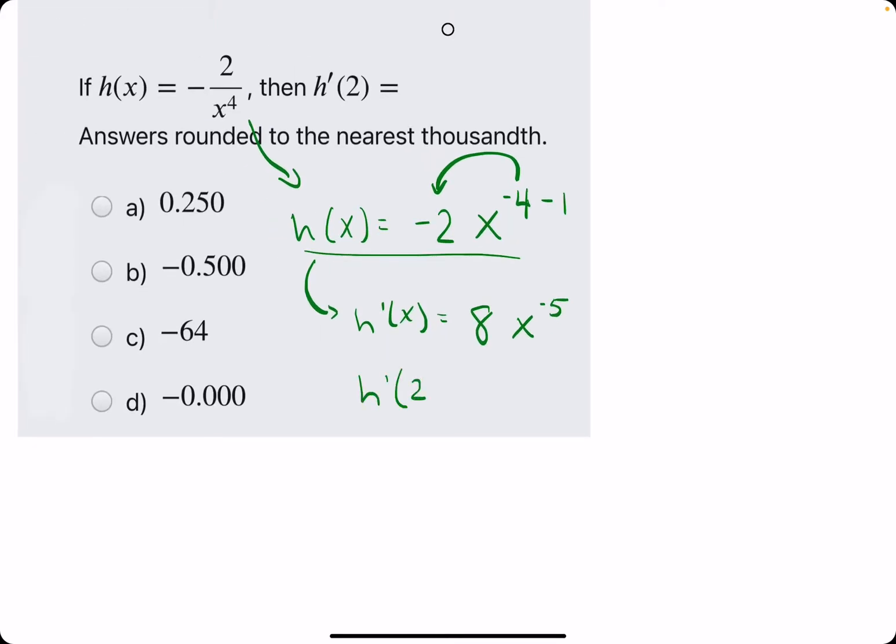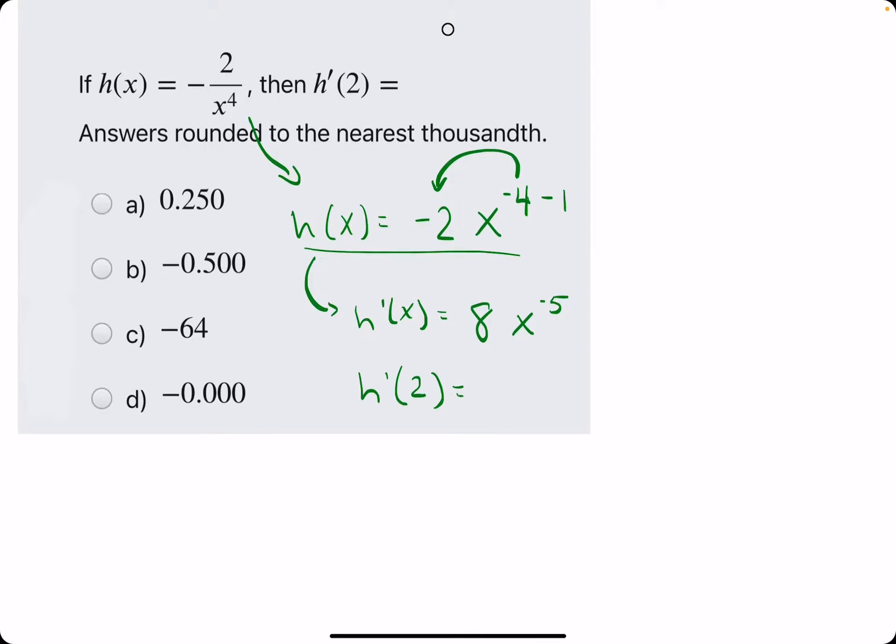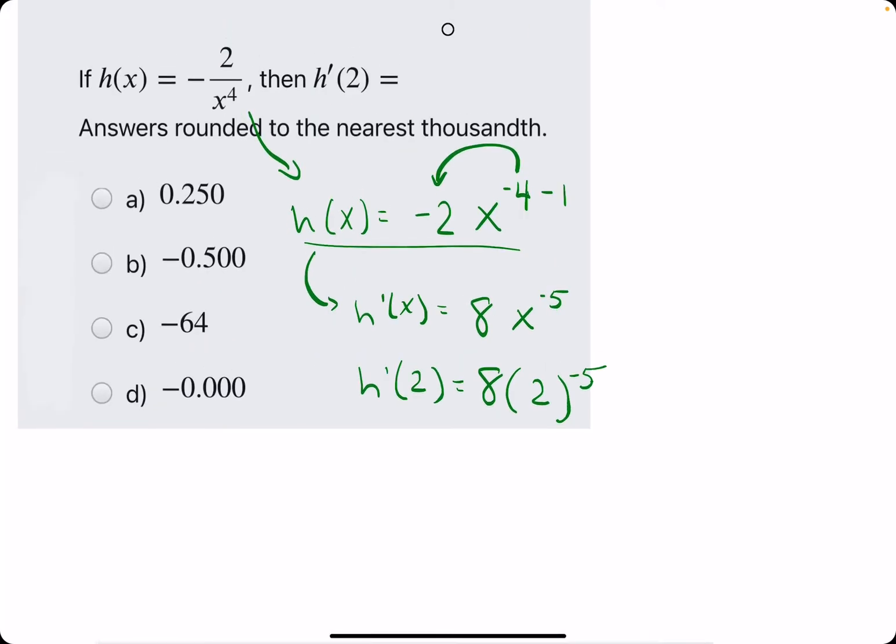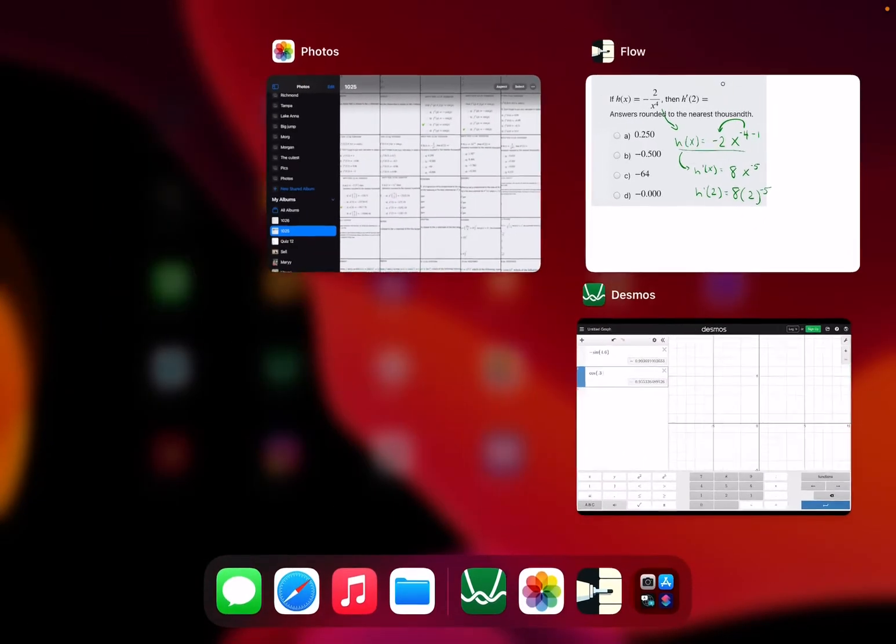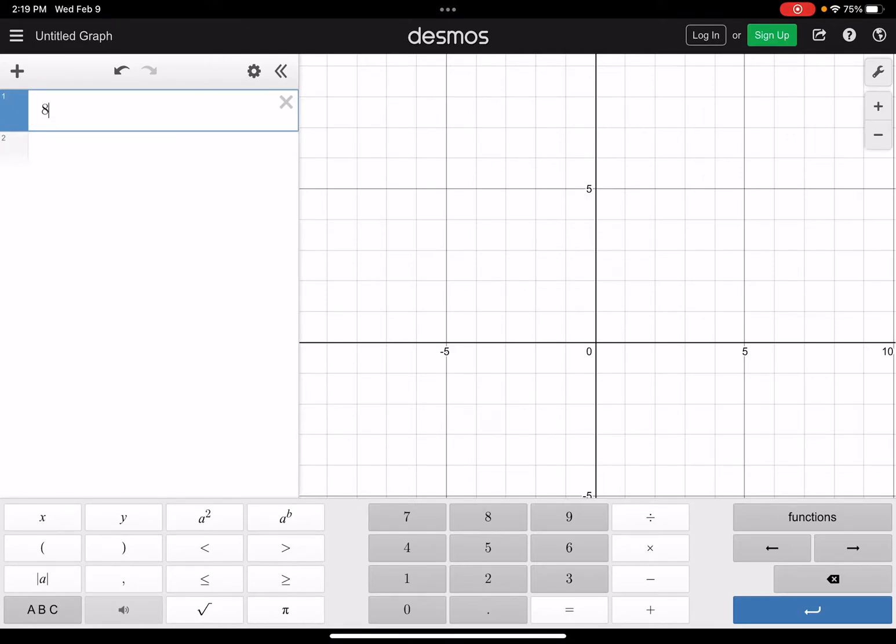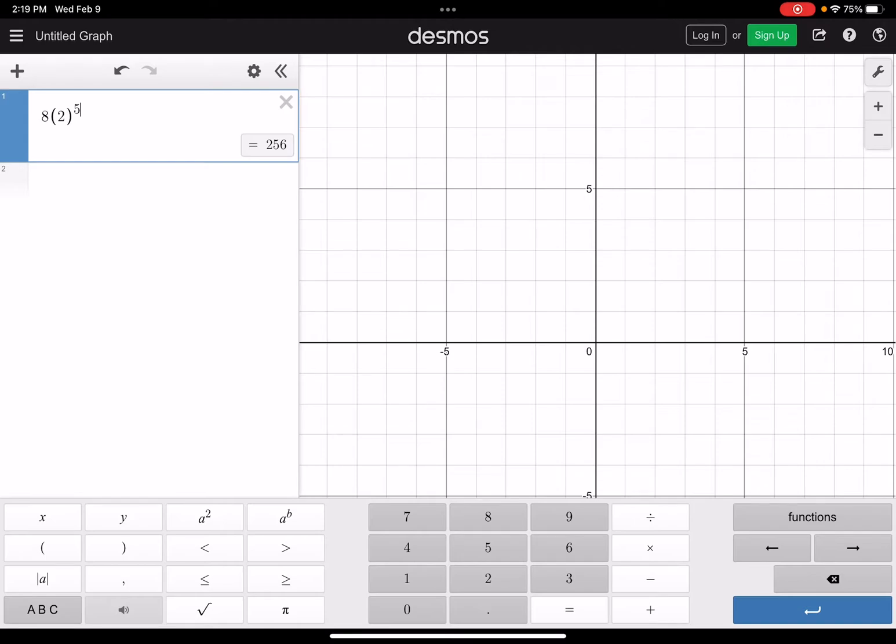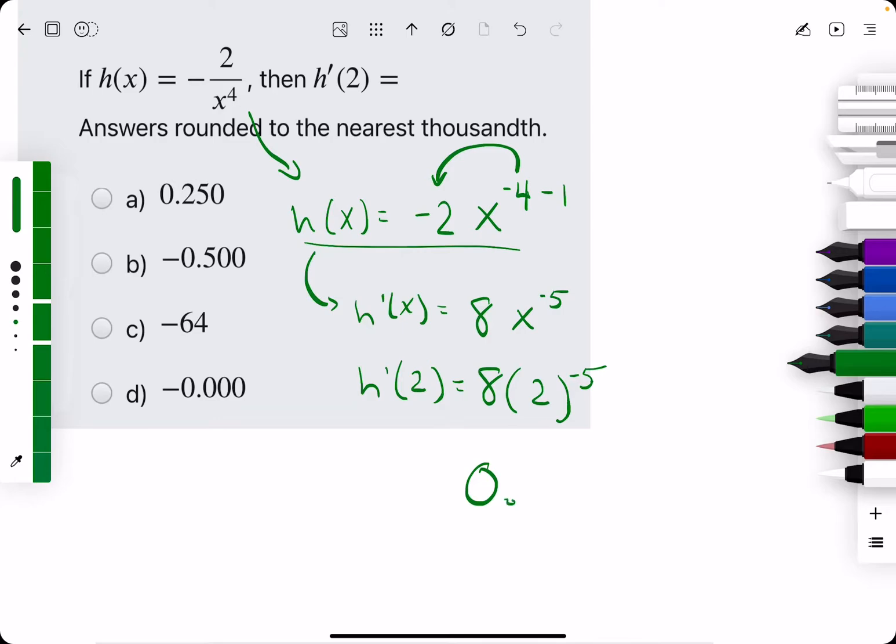So then we're finding h'(2). So we plug in 2 and I'll talk through how to work it out by hand, but let's start with working it out with Desmos. So 8 times 2 to the negative 5. Alright, so we get 0.25 as our answer. So that looks like option A. Break out the eraser to see that A is our answer.